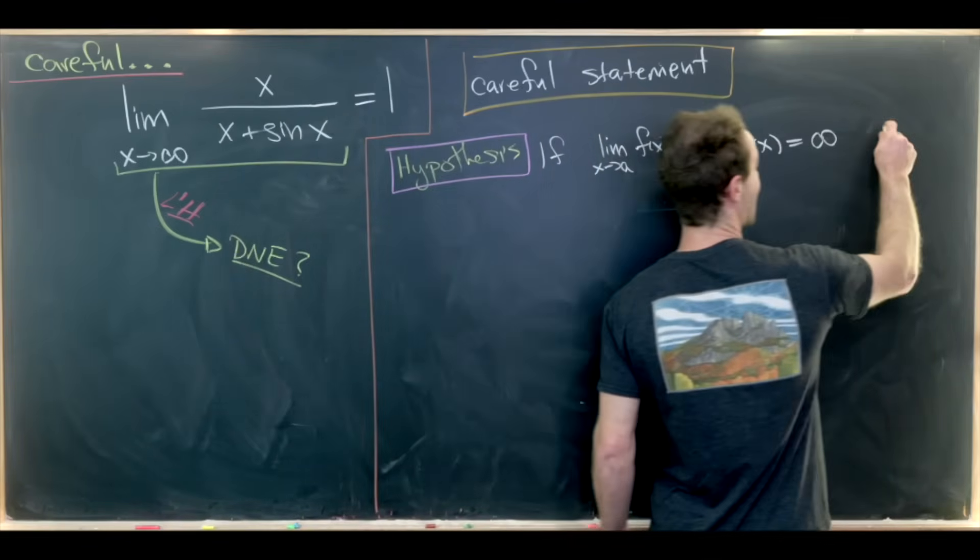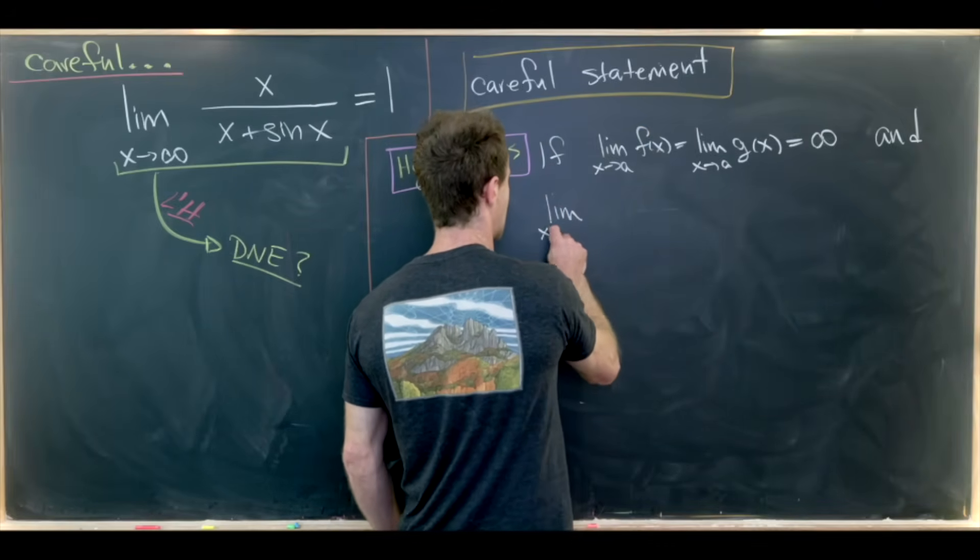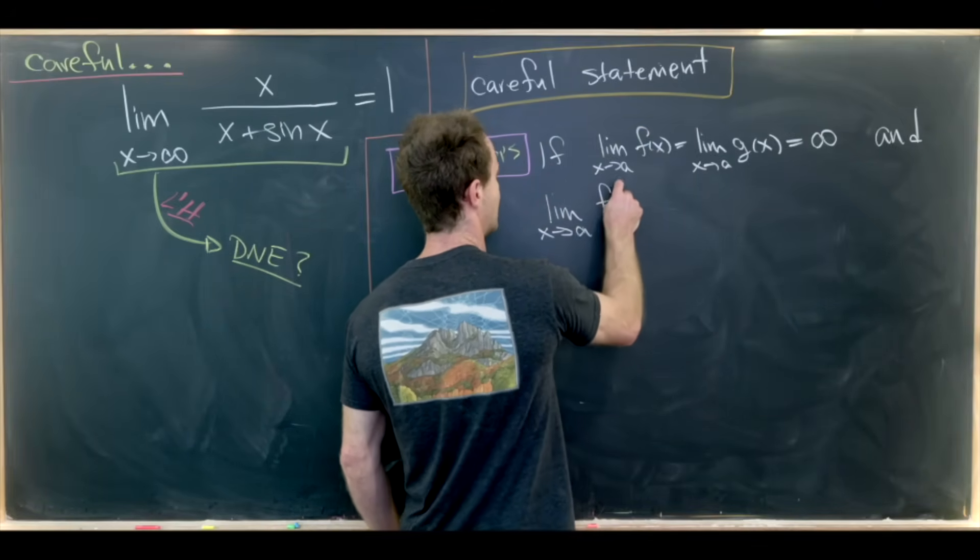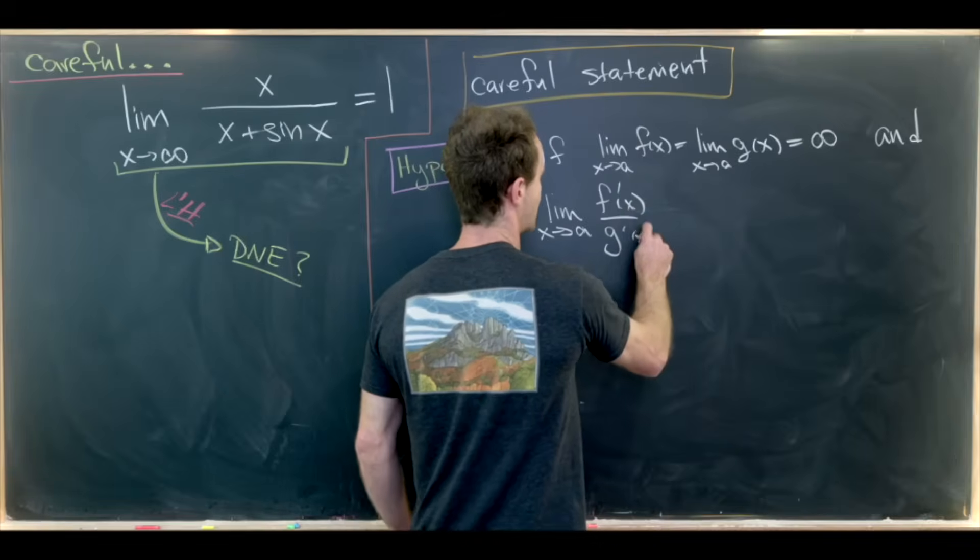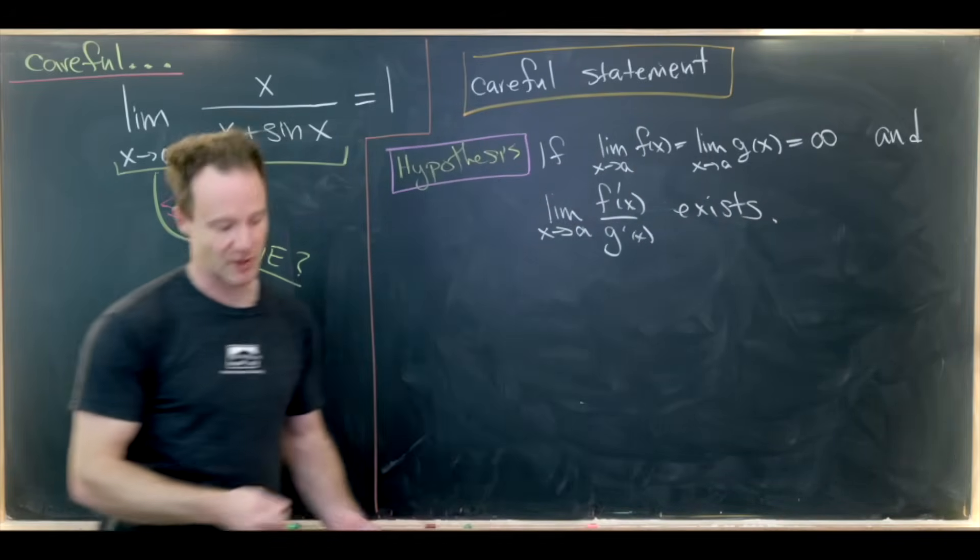So if we have that, and the limit as x goes to a of f prime of x over g prime of x exists, so that's our hypothesis.